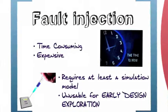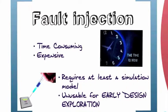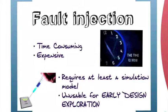So you may ask, how is this done today? Well, people mostly use fault injection. They take the system and artificially inject faults to see how the system reacts. This approach is slow, expensive, and it requires at least a simulation model which, given the complexity of the system, is usually not available. This makes it also unusable for early design exploration.